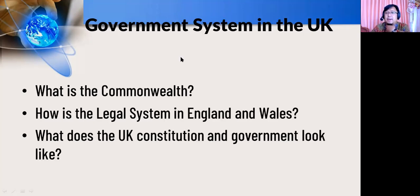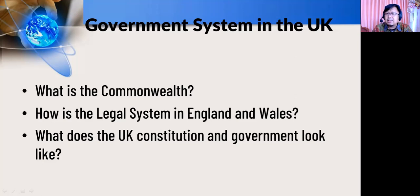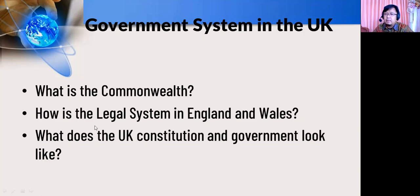We need to talk about the government system in the UK. After you know where the United Kingdom is located, now it is time for you to understand what the UK's government system looks like. I separate information about this into three points: first, what is the Commonwealth? Second, how is the legal system in England and Wales? And third, what does the UK constitution and government look like? After discussing these three points, we will move on to social life in the United Kingdom.